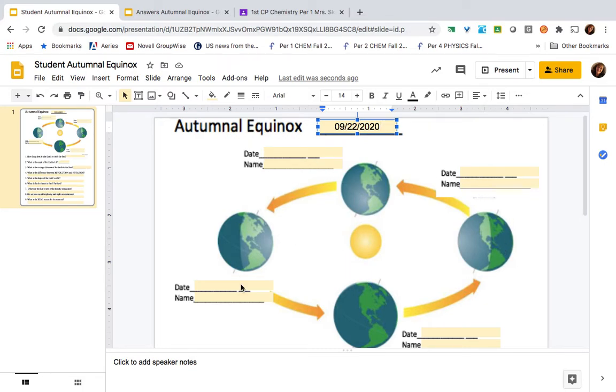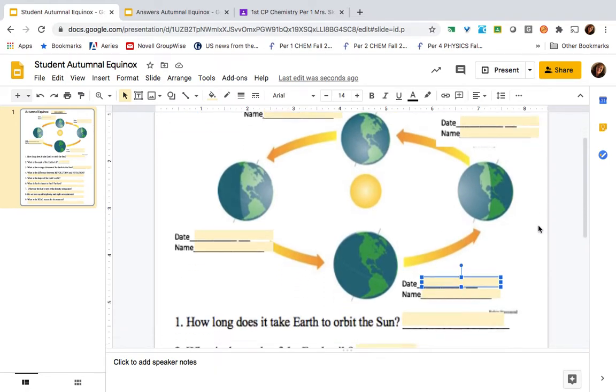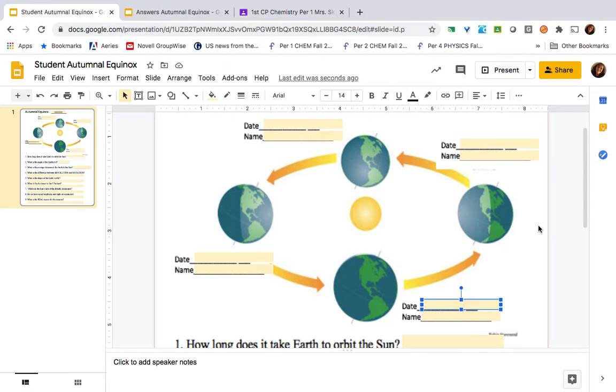This is a representation of our path around the Sun. We spin counterclockwise and we travel counterclockwise around the Sun. There are four dates each year that mark the beginning of the seasons, and you are here down at the bottom. So this is a fillable document, a Google Slide that you can type into.